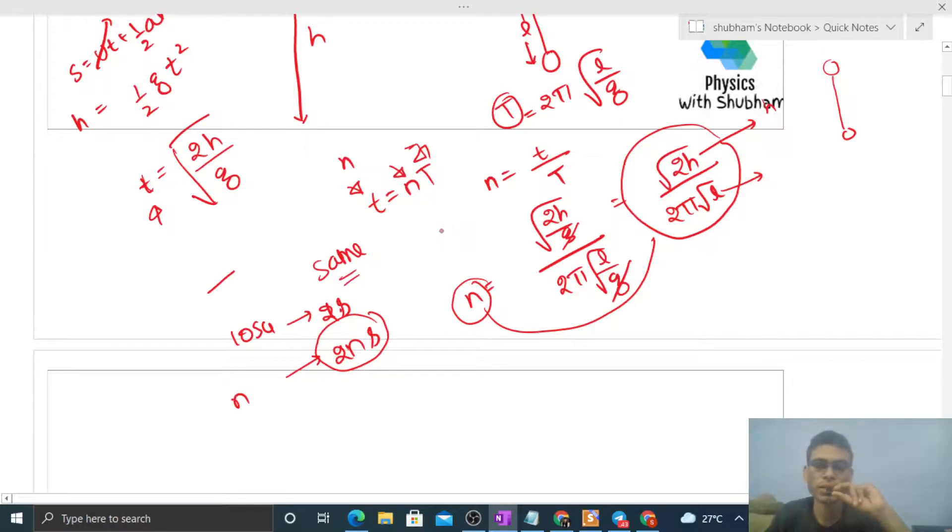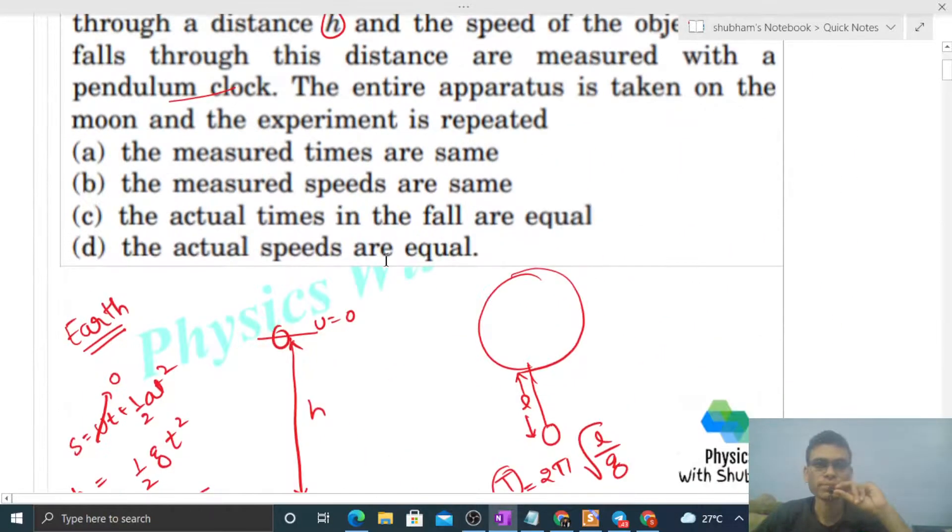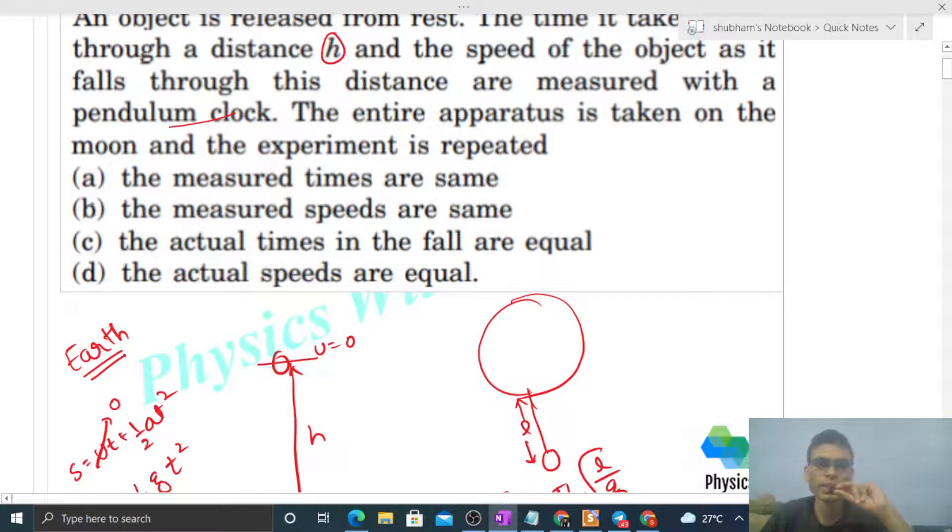So let's see, the measured times are same, of course. The measured speeds are same, yeh bhi same hoga. Because speed aap kaise measure karoge? Speed measure hoga distance upon time se. Aur yeh jo time humne measure kiya yeh pendulum clock se kiya hai. So h toh waise bhi same hai aur yeh jo time humne measure kiya yeh bhi same hai. That's why jo measured speed, that will be same.